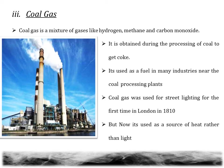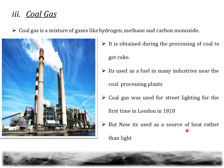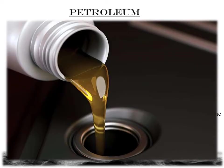The third product is coal gas. Coal gas is a mixture of gases like hydrogen, methane and carbon monoxide. It is obtained during the process of converting coal to coke. It is mainly used as a fuel in many industries because all these gases are highly combustible and produce heat on burning. Therefore it is used as a fuel in industries near the coal processing plants. Coal was used for street lighting for the first time in London in 1810, but now it is used as a source of heat rather than light. So we saw what is coal, the different types of coal, the different products of coal and how coal is formed.